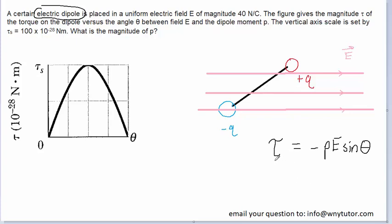In this equation, the Greek letter tau is used to represent the torque that is acting on the electric dipole. E would represent the magnitude of the electric field. We have p, which is going to represent the magnitude of the electric dipole moment, which is indeed what we're trying to figure out.